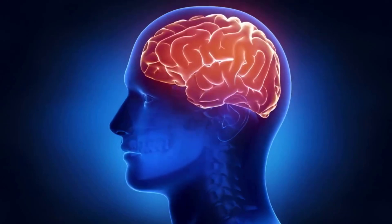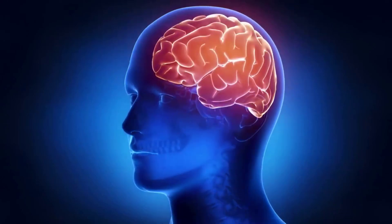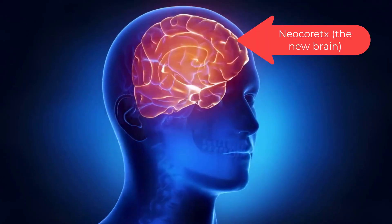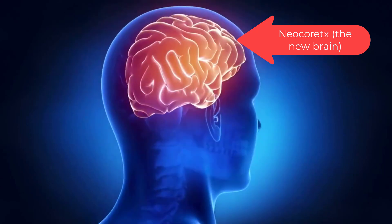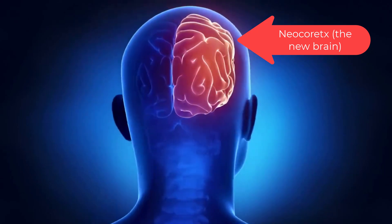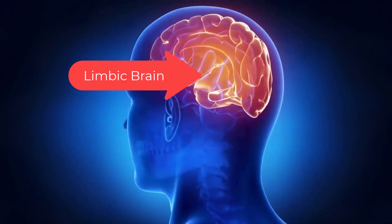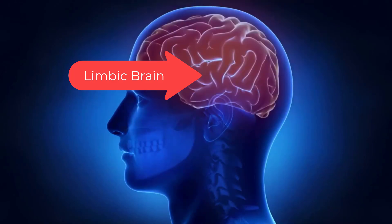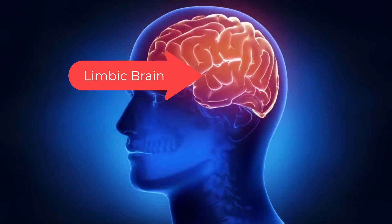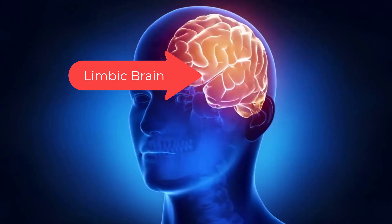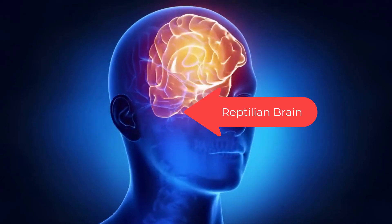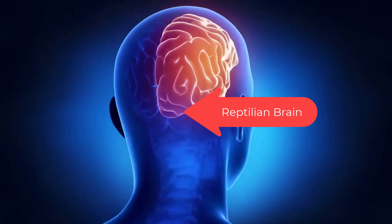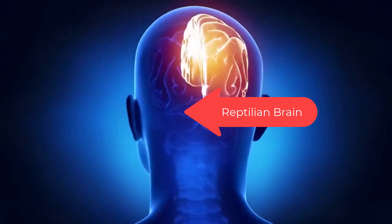Your brain has three basic layers and only one real decision maker. The new brain, the neocortex, thinks and processes rational data. The middle brain, the limbic brain, feels emotions and is our instinct for fight or flight response. The old brain, the reptilian brain, decides.